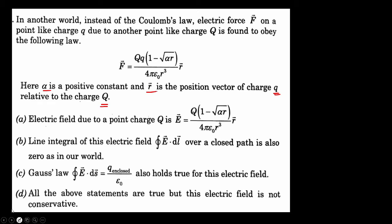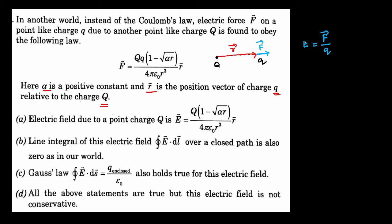Let's visualize: there is a point charge Q and another point charge small q. The position vector goes from Q to q, and the force is in the same direction as the position vector. By definition, the electric field is force per unit charge. Rearranging, we get E = Q/(4πε₀r³) times (1 minus root of αr) times vector r. So by observation, the first option is correct.